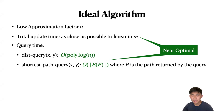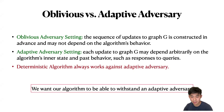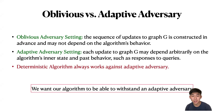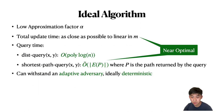Recall this is our ideal algorithm. There's one more requirement to add: I want to distinguish between oblivious versus adaptive adversary. For an oblivious adversary, the sequence of updates to graph G is constructed in advance and cannot depend on the algorithm's behavior. However, in the adaptive adversary setting, each update to G may depend arbitrarily on the algorithm's past behavior, such as its responses to queries. Deterministic algorithms always work against an adaptive adversary, so we would like our algorithm to withstand an adaptive adversary.